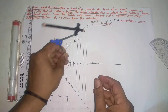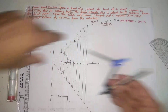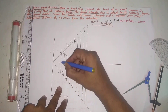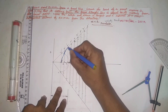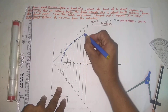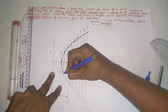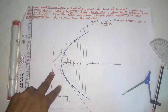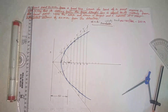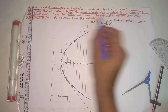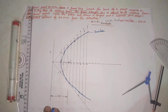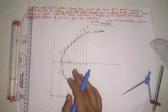At point 8, with distance 8-dashes, taking F as center, make arcs here. Join all the arc intersection points: 2, 3, 4, 5, 6, 7, 8, to complete the parabola curve.